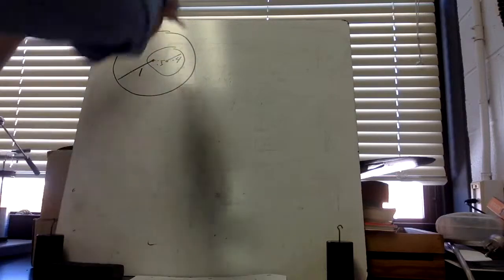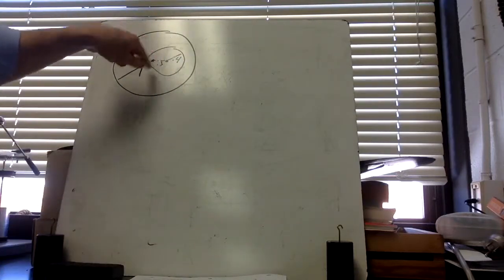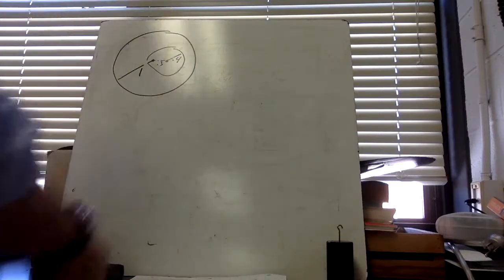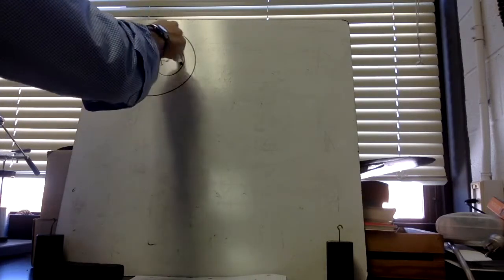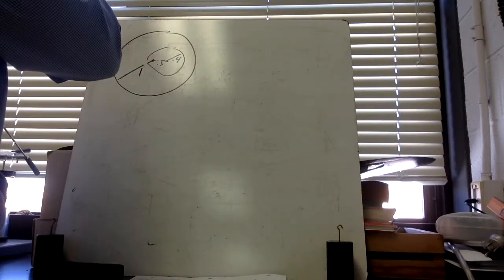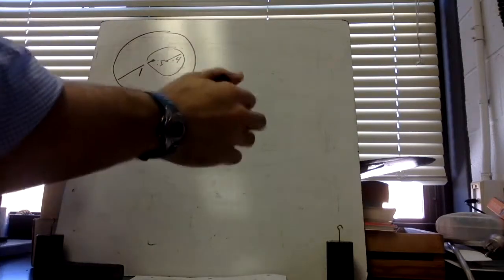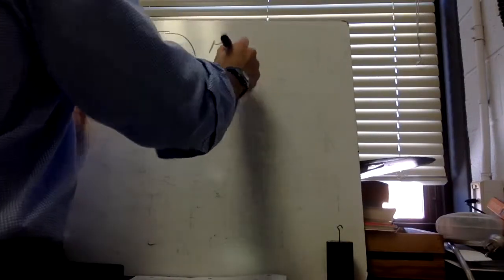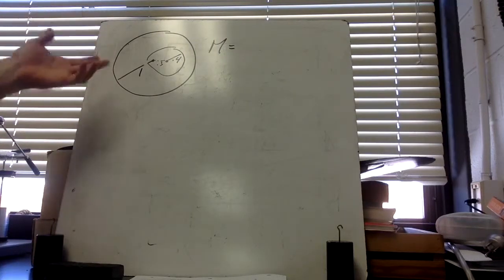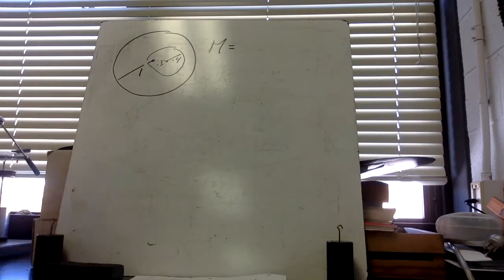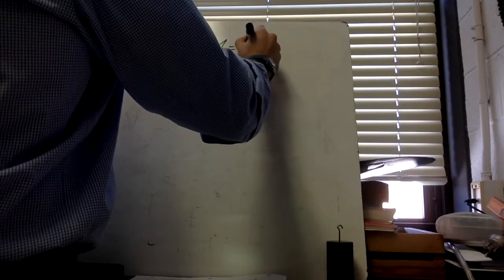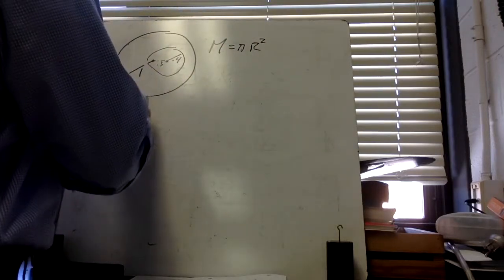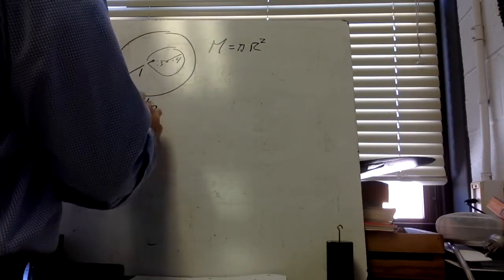In example three, we have a circle with a circular hole cut out. The center of the hole is 0.3 meters from the center of the large circle, and the hole has a radius of 0.4 meters. We treat the hole as negative mass. The big circle has radius R = 1 meter and little r = 0.4 meters. The total mass equals the area of the big circle (πR²) minus the area of the hole (πr²).